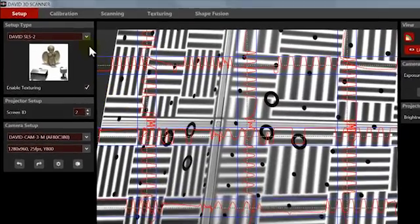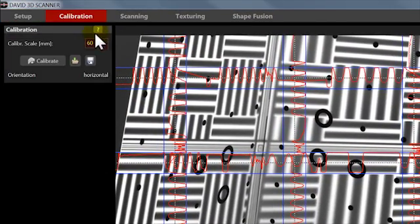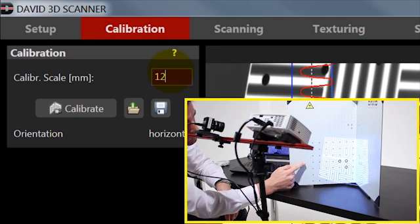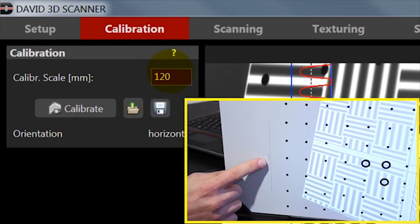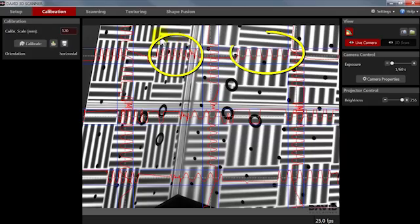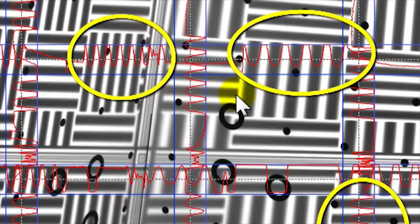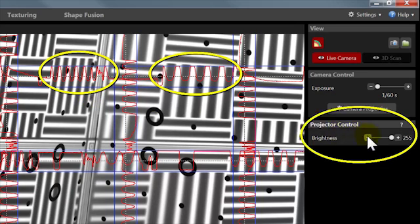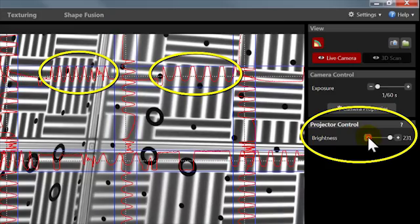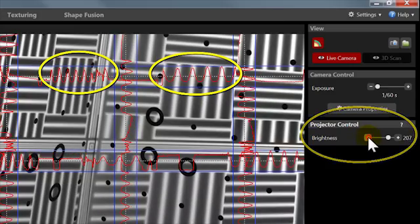In the David software, open the calibration menu and enter the correct scale size of the calibration pattern you are using. Now it may be that the calibration panels are much brighter than the scanned object, then the sine waves will be distorted. Decrease the projector brightness setting temporarily to get clean sine waves that are not cut off.